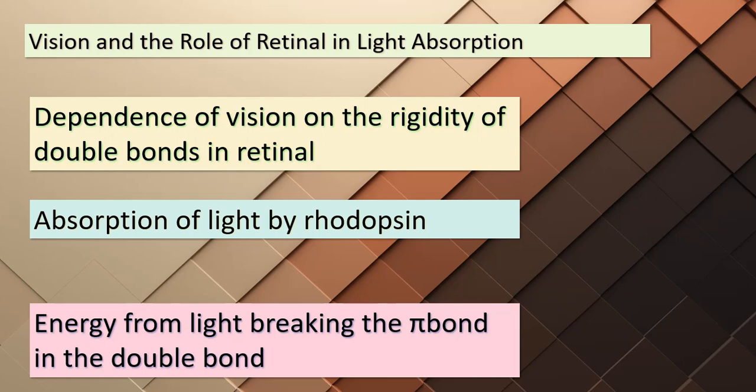This breaking allows rotation around the bond axis, causing a change in the geometry of the retinal molecule. As a consequence, retinal separates from opsin. This separation triggers a cascade of reactions that ultimately result in a nerve impulse being sent to the brain — the sensation of vision. It's astounding that just five photons of light can set off this intricate process and stimulate the eye to perceive the world around us.